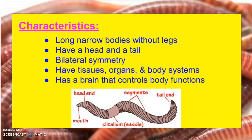So let's start with the characteristics. Worms have long narrow bodies without legs. That's what makes them different than say a centipede or a millipede — they don't have those legs. They have a head and a tail and they have bilateral symmetry, which means if you were to cut them from head to toe right down the middle they would be the same on both sides, just like we would.